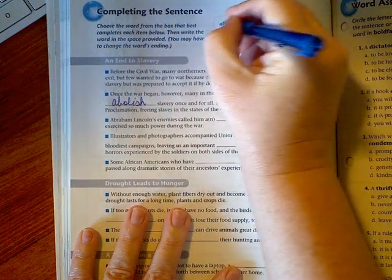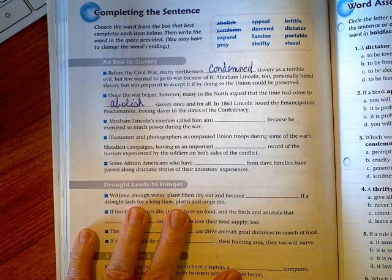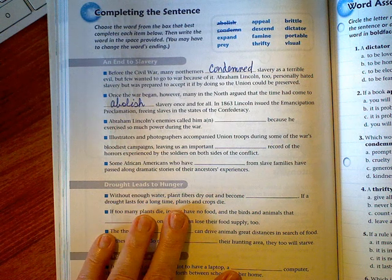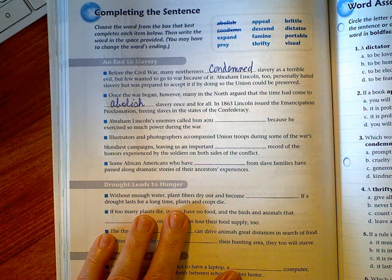...abolish slavery once and for all. In 1863, Lincoln issued the Emancipation Proclamation, freeing the slaves in the states of the Confederacy.